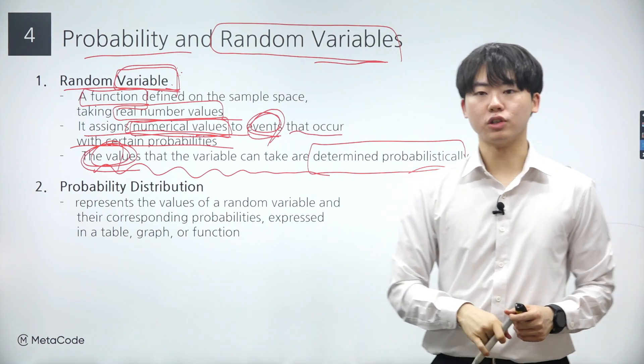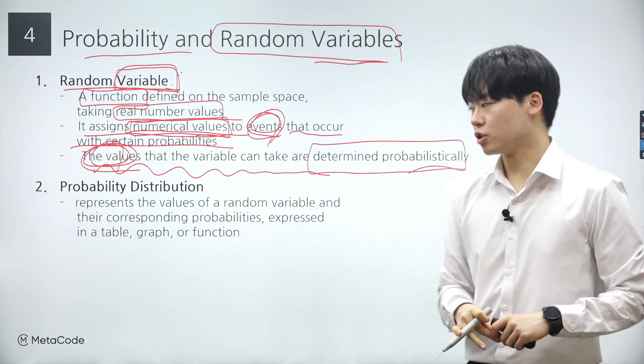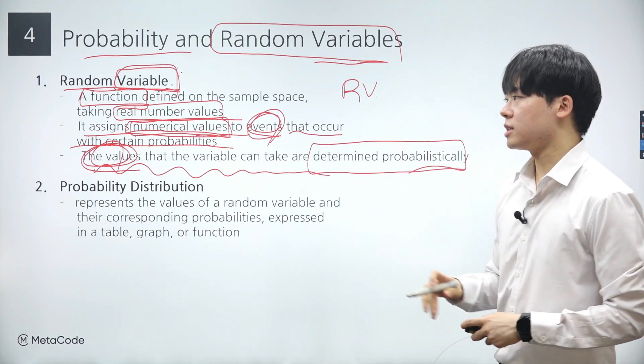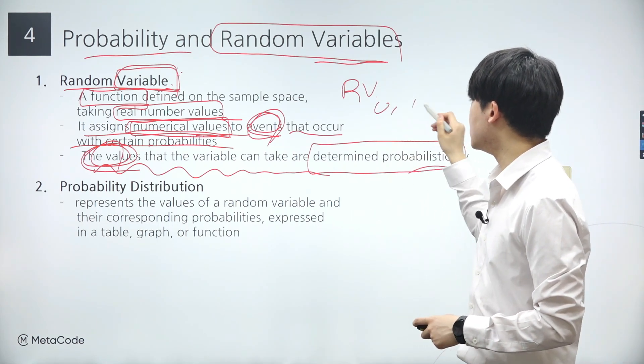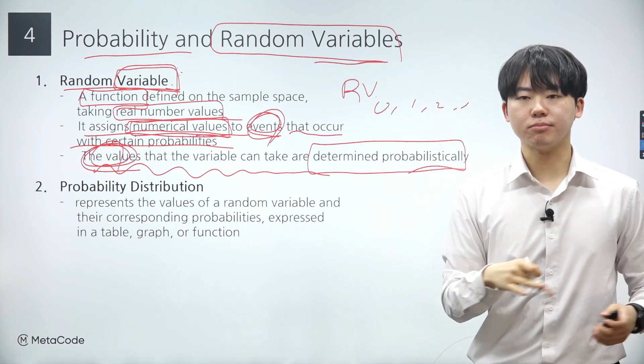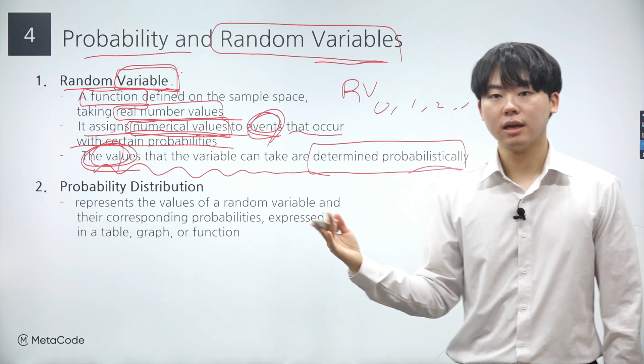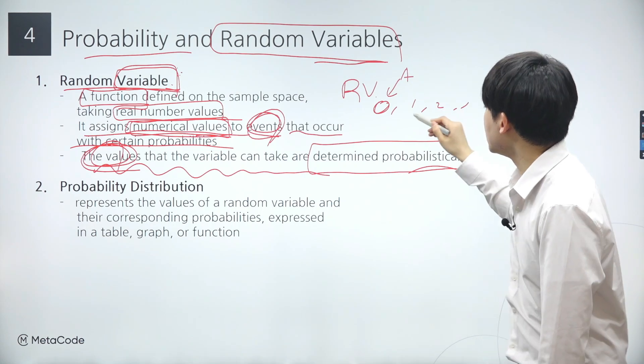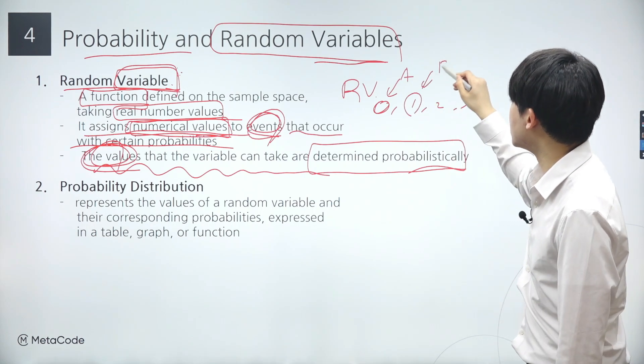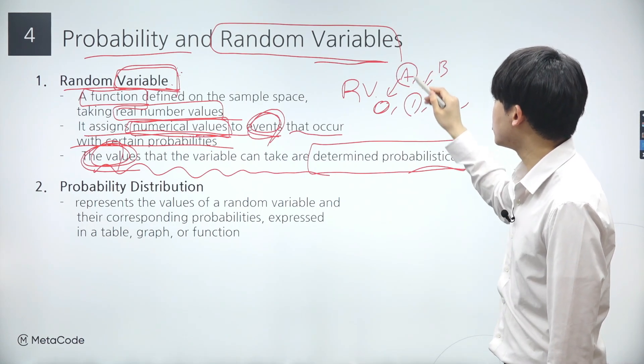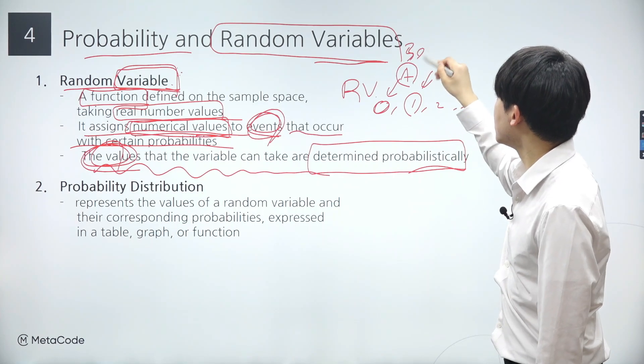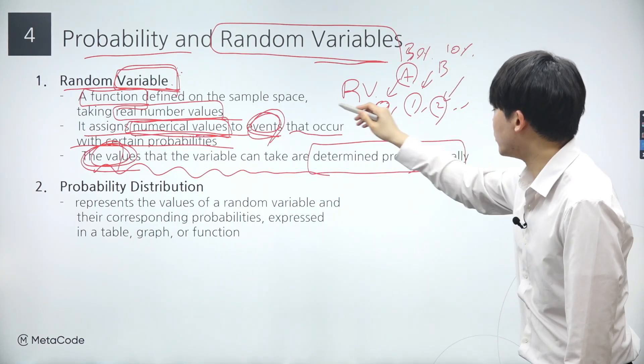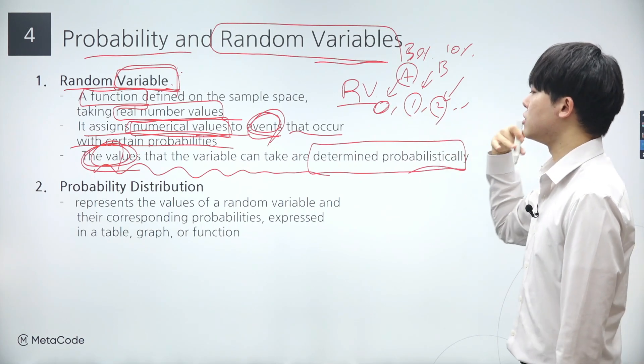Let's explore what it means for values to be determined probabilistically. Imagine a random variable that can take the values 0, 1, 2, and so on. These values are not assigned randomly. Instead, each value corresponds to a specific event. For example, let's say the events corresponding to 0 and 1 are A and B.